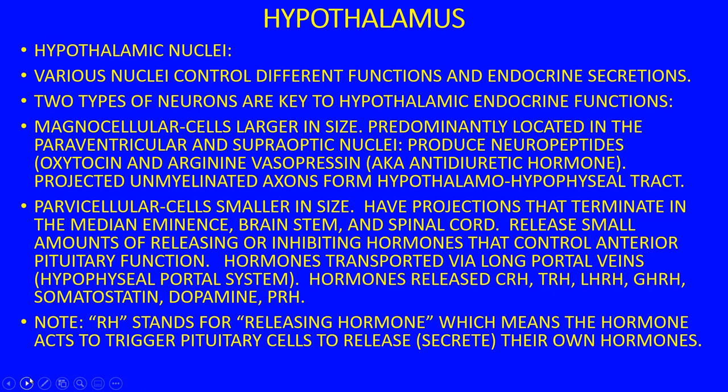Parvicellular cells are much smaller, with projections terminating in the median eminence and also reaching the brainstem and spinal cord. They release small amounts of releasing or inhibiting hormones that control anterior pituitary function. We talk a lot about releasing hormones (RH), but several hormones act in an inhibitory fashion as well.